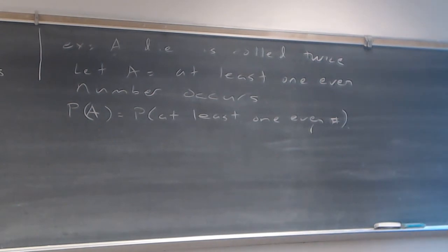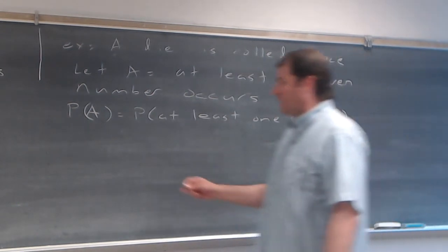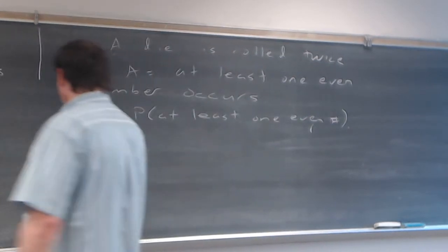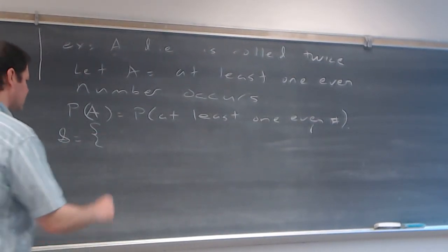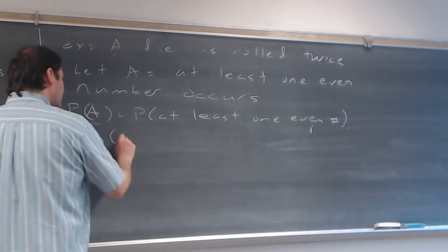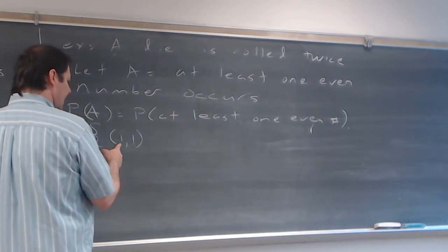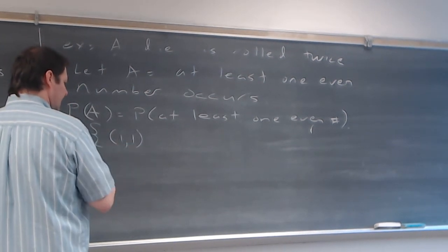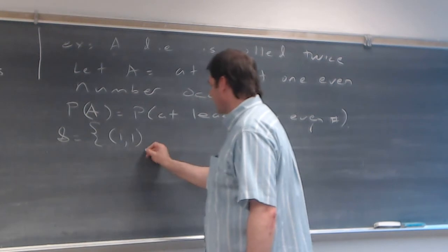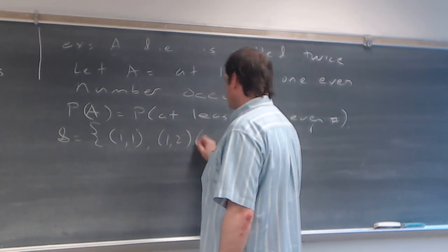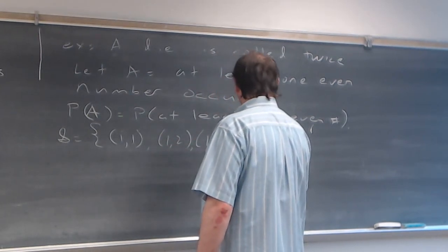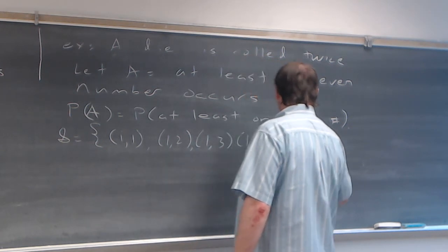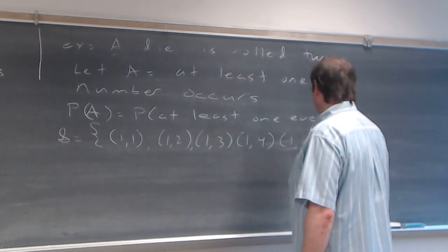I'm going to take my time and start off by noting what the sample space is. Here we have (1,1) as an outcome; rolling a one, then another one. Then (1,2), (1,3), (1,4), (1,5), and (1,6) — all the ways the first roll could be a one.